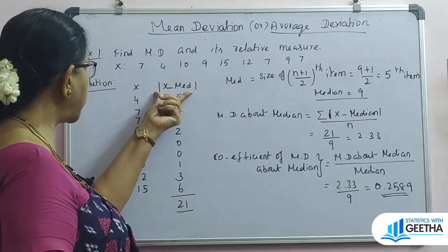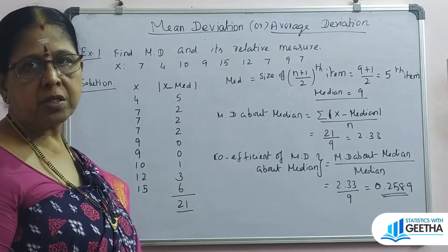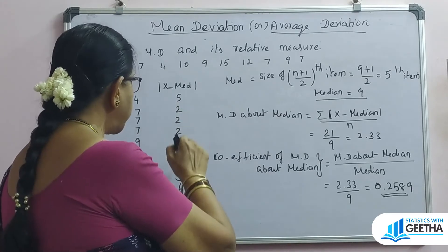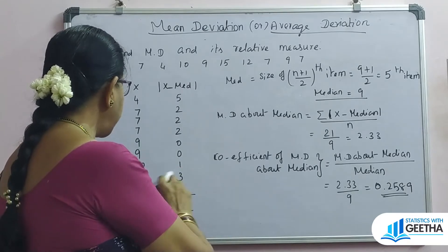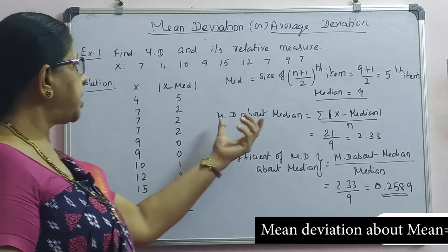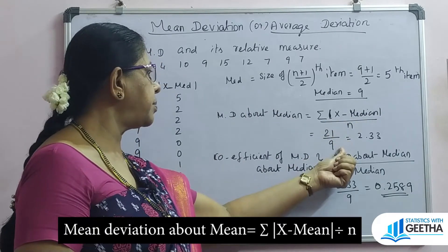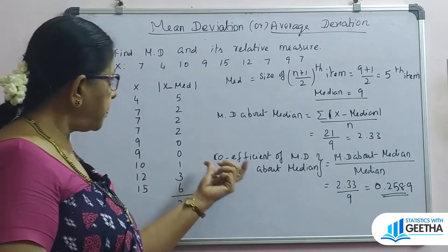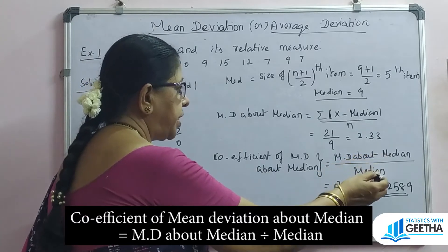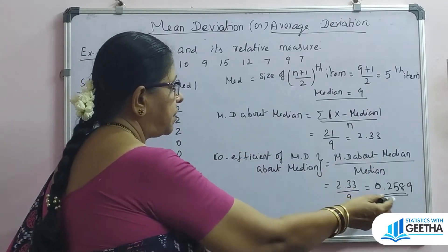Now we calculate deviations from the median. The absolute deviations are: |4−9|=5, |7−9|=2, |10−9|=1, |12−9|=3, |15−9|=6, |9−9|=0. The total summation of mod(x minus median) equals 21. Mean deviation about median equals 21 divided by n, which gives 2.33. The coefficient of mean deviation about median equals mean deviation divided by median: 2.33 divided by 9, which is 0.2589.